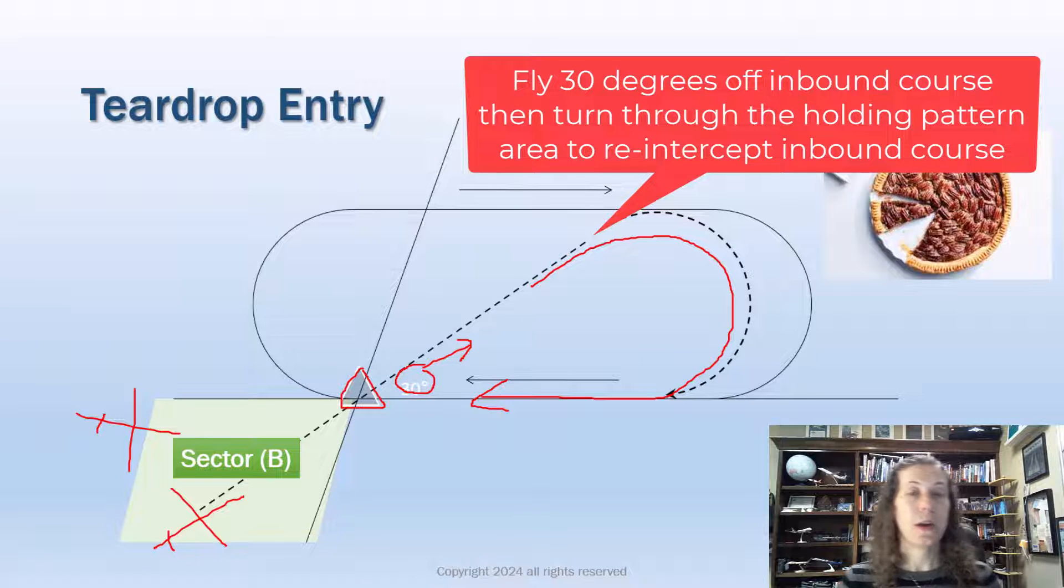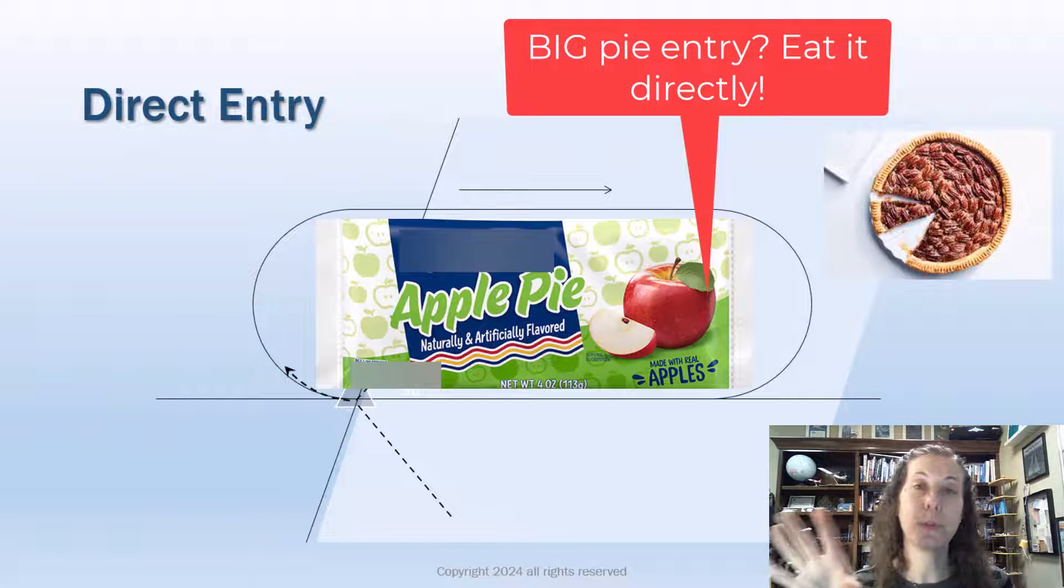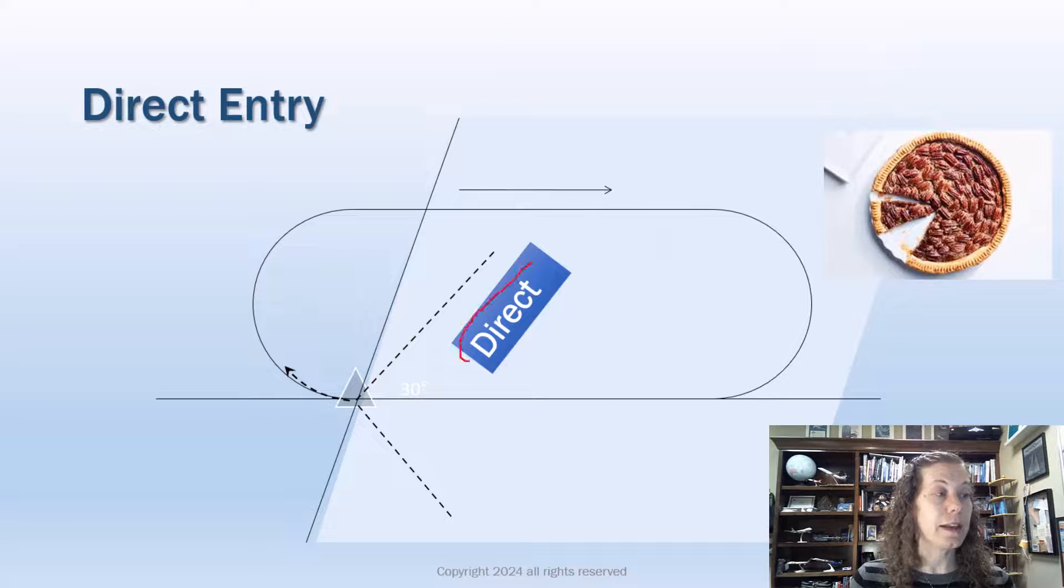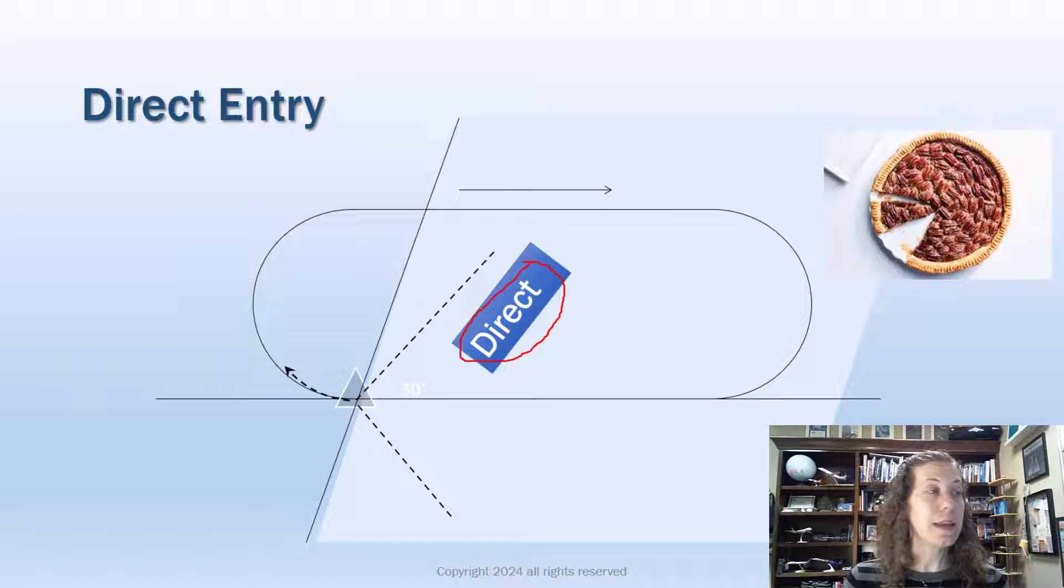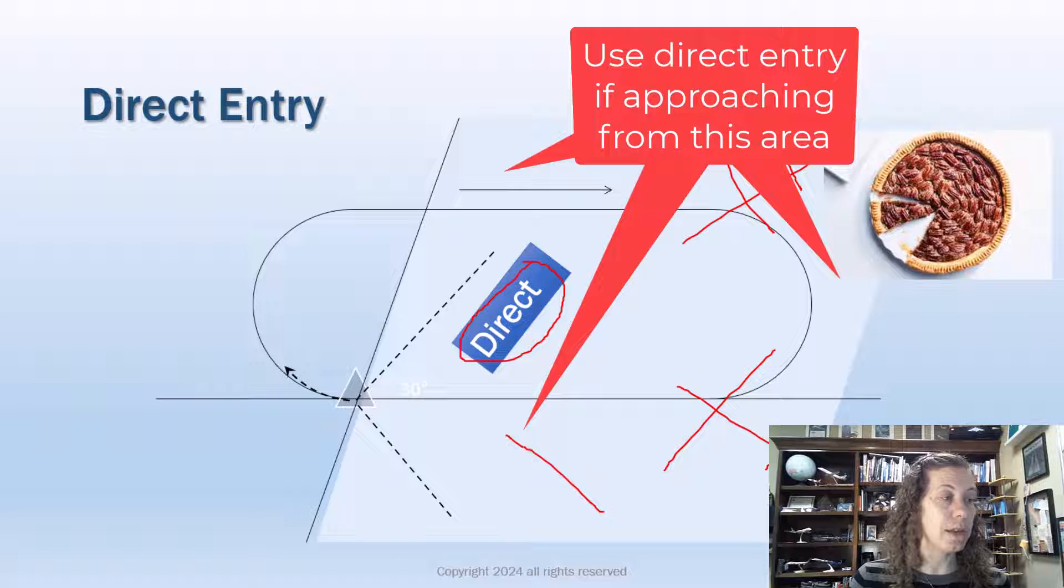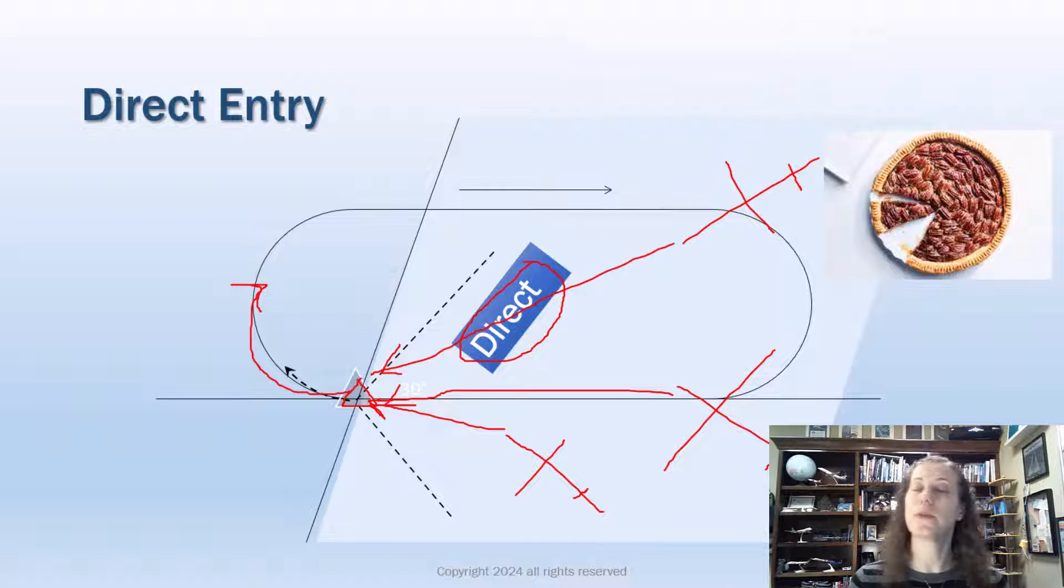Okay, now what about the big pie? The big pie is way over here, the beautiful huge piece of pie. Basically, I got over half of the pie when I cut up my holding pattern pie, and that is a direct entry. So anytime an aircraft is approaching the holding pattern from this direction, anywhere in this area, we fly straight to the fix in the most direct way possible. When we hit our fix, then we just begin flying the holding pattern as directed. So direct entry is probably the easiest and my personal favorite because I am kind of a lazy pilot.